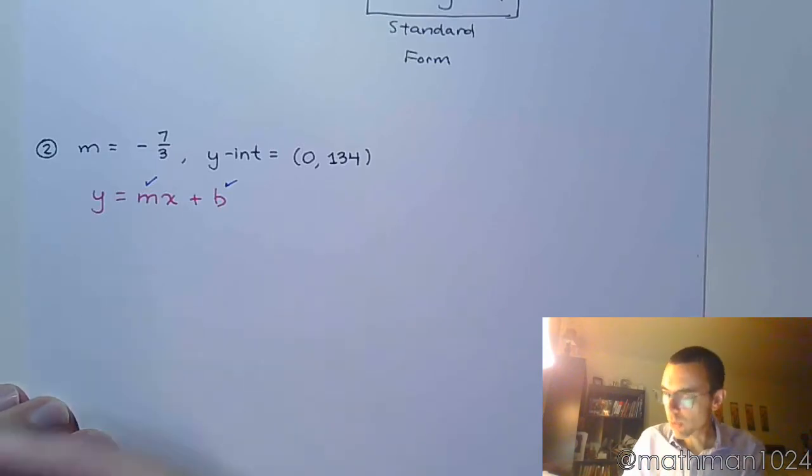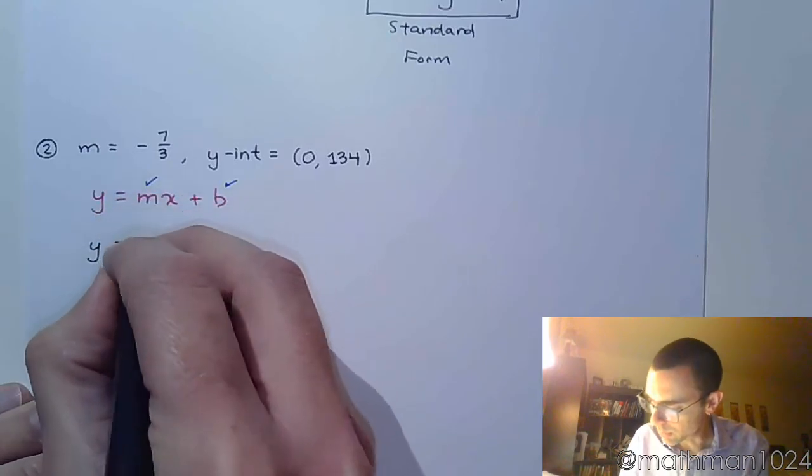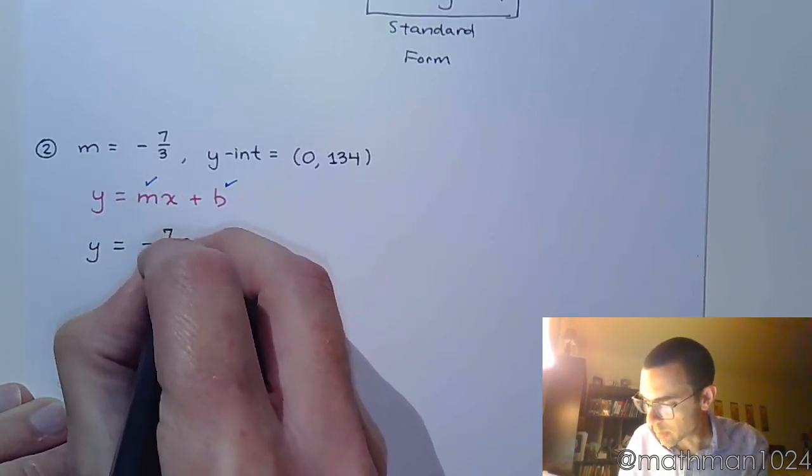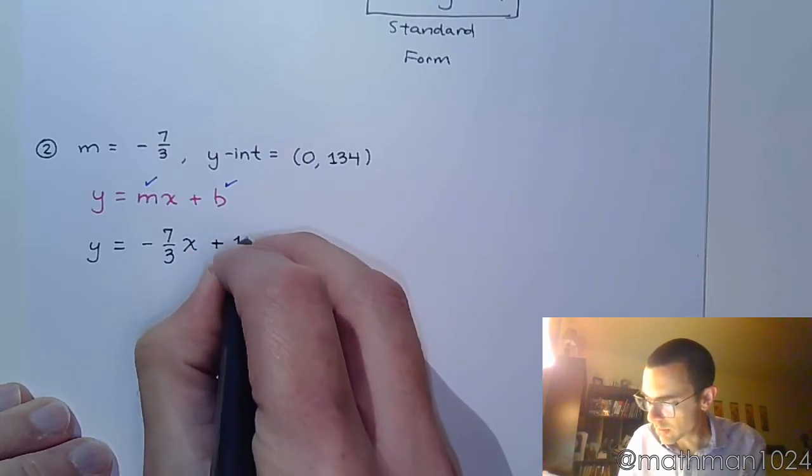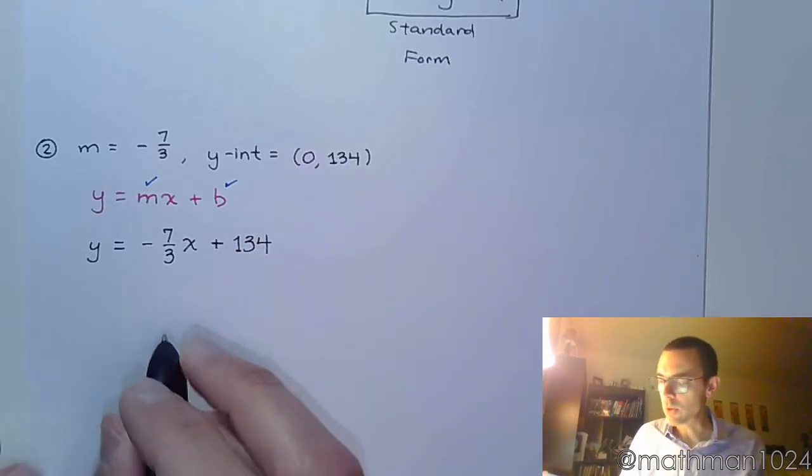So if I'm just going for the slope-intercept form, I can say that y is equal to my slope, which we know to be negative 7 thirds times x, and then plus my b-value, which is 134. So there really isn't a whole lot to do here in this problem.